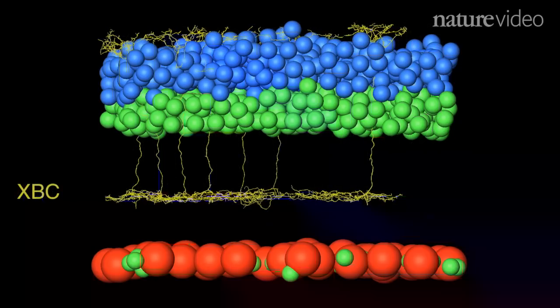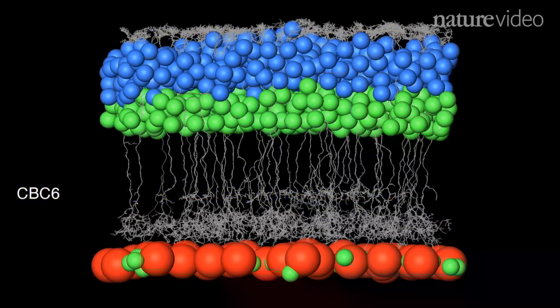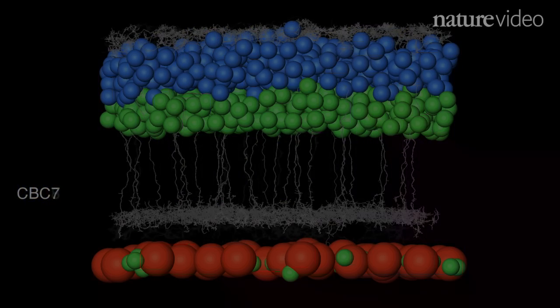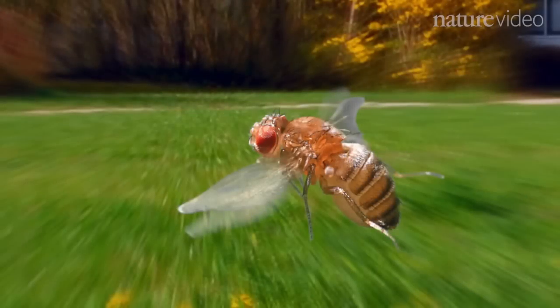There it is: xbc, a type of bipolar cell that relays visual information from photoreceptors to other cells in the network. It's a noticeably different shape to other known bipolar cells.